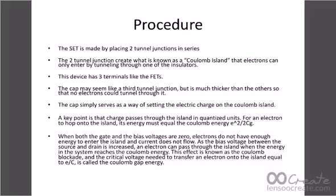The device has three terminals like a FET. The gate may be a third tunnel junction but it is much thicker so fewer electrons tunnel through it. This is another way of setting the electric charge on the Coulomb island. A key point is that charge passes through the island in quantized units. For an electron to hop onto the island, its energy must equal the Coulomb energy. When both gate and bias voltage are zero, electrons do not have enough energy to enter the island and current does not flow. As the bias voltage between source and drain increases, current can pass through the island when the energy reaches the Coulomb energy — this effect is known as Coulomb blockade, and the critical voltage E/C is called the Coulomb energy gap.